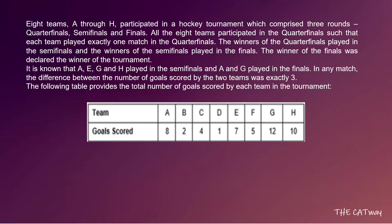The question says that eight teams A through H participated in a hockey tournament which comprised three rounds: quarter-finals, semi-finals, and finals. All eight teams participated in the quarter-finals such that each team played exactly one match. The winners of the quarter-finals played the semi-finals, and winners of the semi-finals played in the finals.